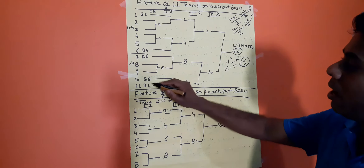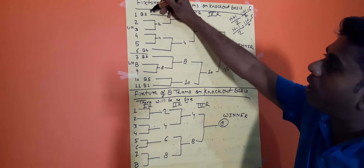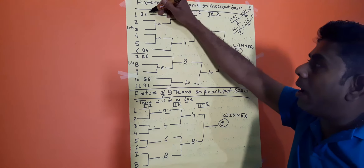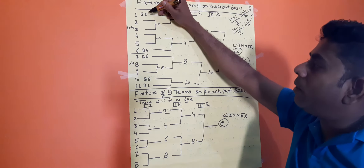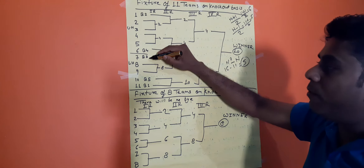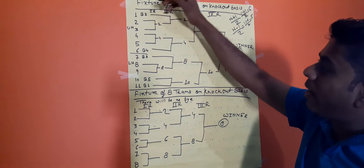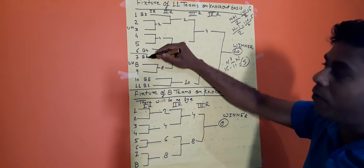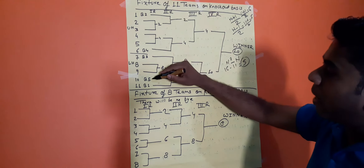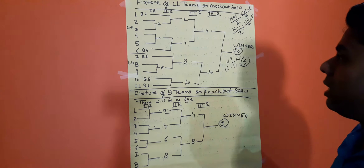The 1st bye goes to the last team of the lower half — that is team 11. The 2nd bye goes to the 1st team of the upper half. The 3rd bye goes to the 1st team of the lower half. The 4th bye goes to the last team of the upper half. The 5th bye goes to the 2nd-to-last team of the lower half.